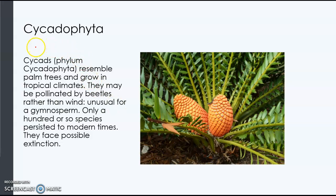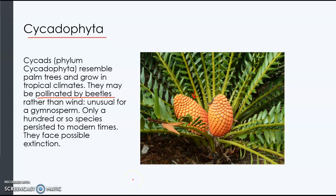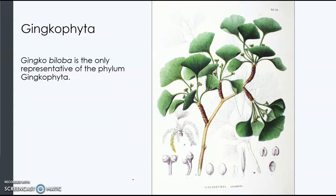We have another group in the gymnosperms called the cycads, or cycadophyta. They look like palm trees and have very large female cones. They're pollinated by beetles instead of the wind. We see insect pollination more in the angiosperms or flowering plants, but these cycads grow in the tropics and are pollinated by beetles.